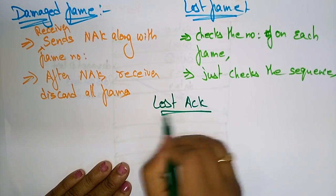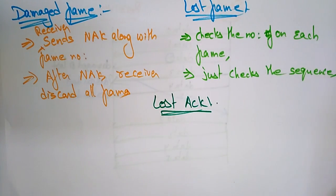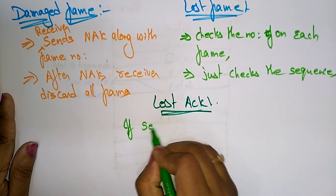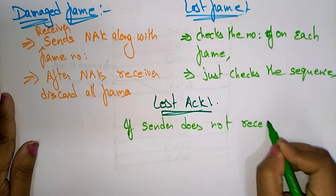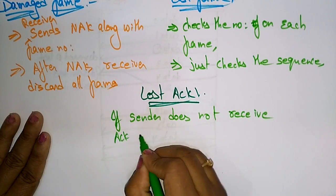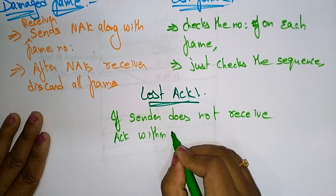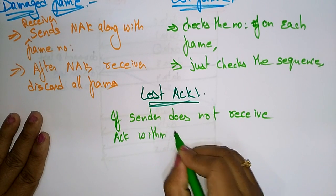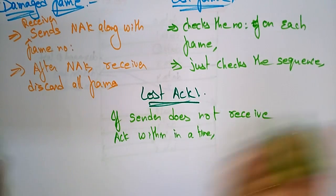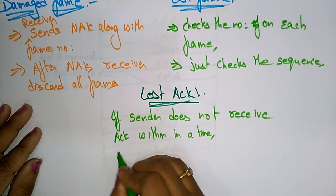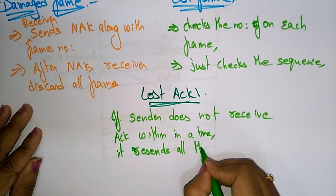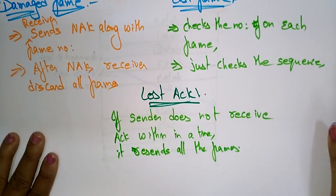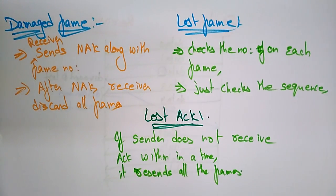For a lost acknowledgement, if the sender does not receive the acknowledgement within a time limit, it resends all the frames. This is the concept of Go-Back-N protocol. Thank you.